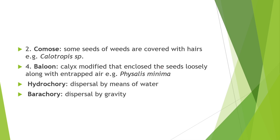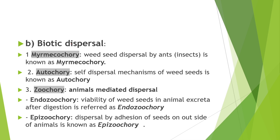Dispersal of seeds by abiotic factors is also known as anemochory. Special structures that perform transportation include: first, pappus — a parachute-like structure, a modification of calyx or hairs, example Tridax procumbens; second, comas — weed seeds covered with hairs, example Calotropis species; third, balloon — a modification of calyx that encloses seeds loosely with entrapped air, example Physalis minima. Dispersal by wind is anemochory, dispersal by water is hydrochory, and dispersal by gravity is barochory.